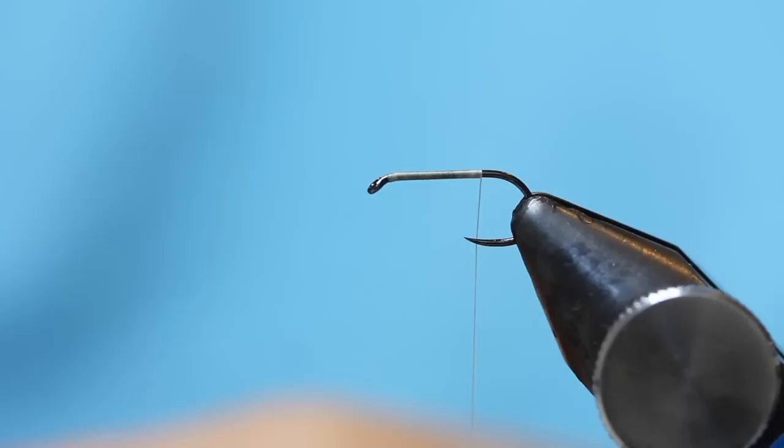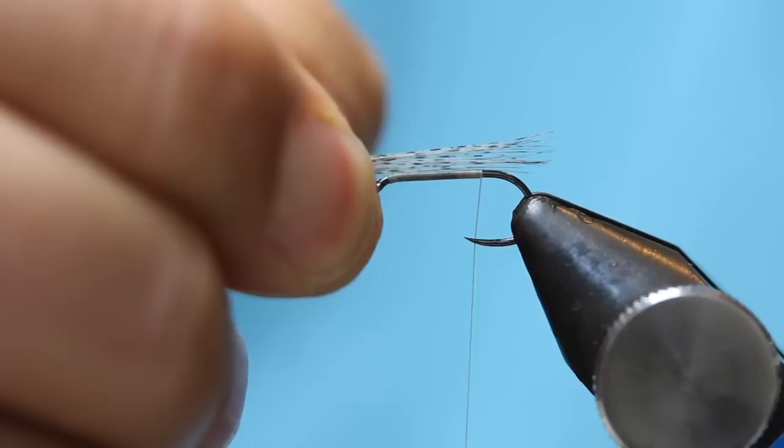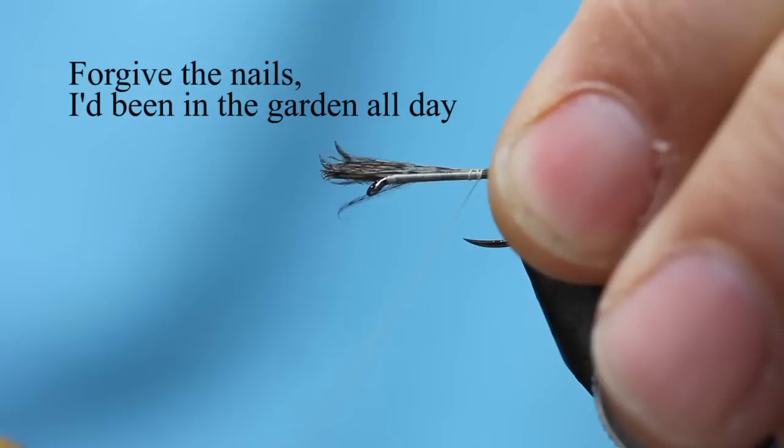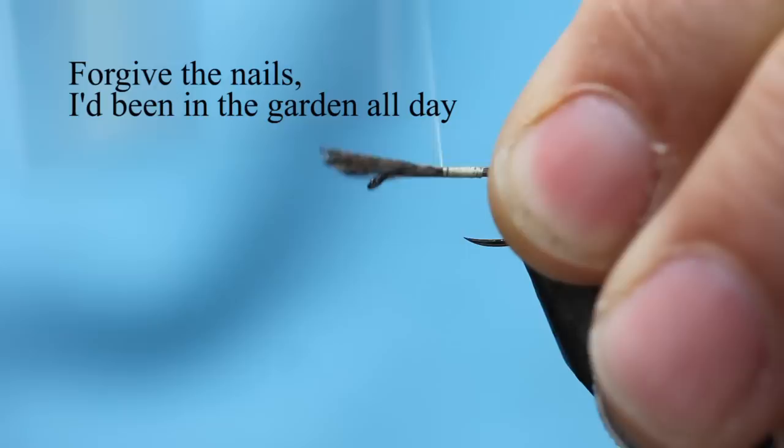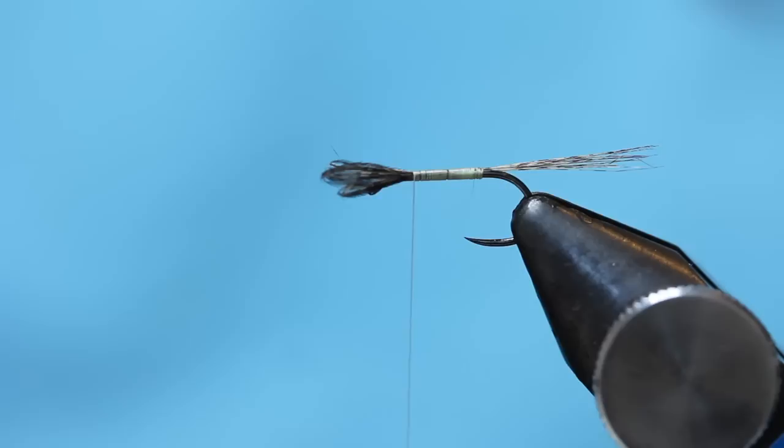I'm just going to take some cook de Leon, like so, same length as the body. Just come in a pinch and loop, couple of turns and wind it all the way back up. Neat touch and turns, stopping two thirds of the body there.